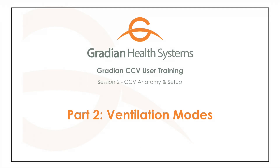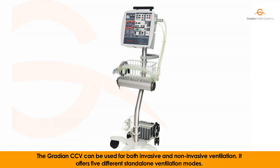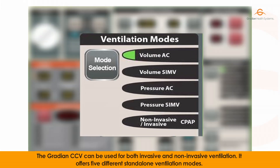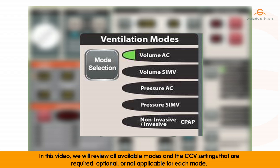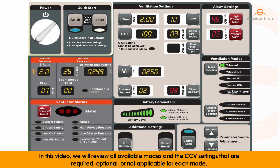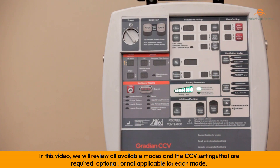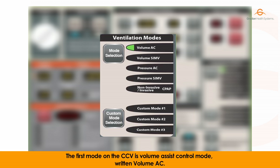The Gradient CCV can be used for both invasive and non-invasive ventilation. It offers five different standalone ventilation modes. In this video, we will review all available modes and the CCV settings that are required, optional, or not applicable for each mode. The first mode on the CCV is volume assist control mode, written volume AC.